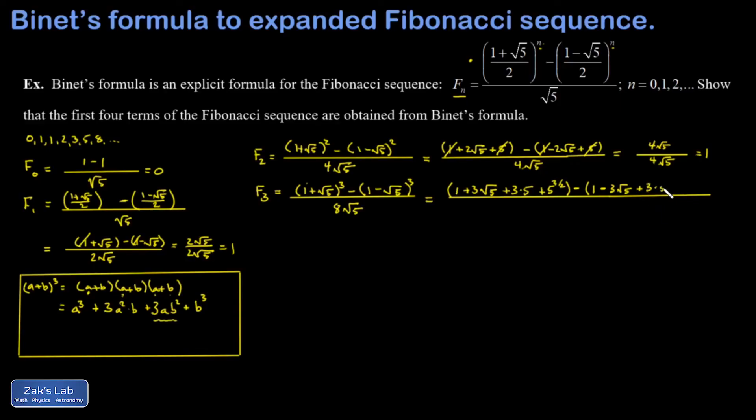And then I end with b cubed. So that's the cube of negative root five. That's going to give me a negative result and it will be five to the three halves.